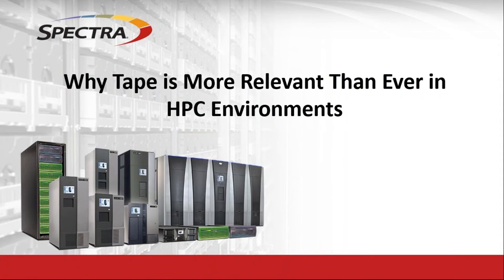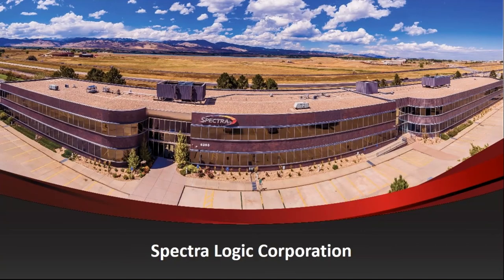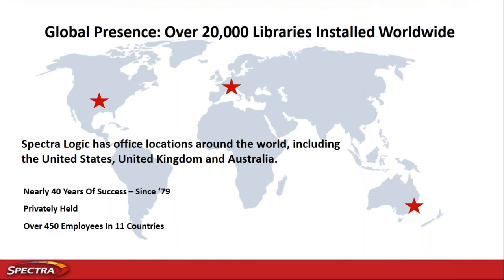For those of you who are not familiar with Spectrologic, we are headquartered out of Boulder, Colorado, known to many as the Silicon Valley of storage in the storage industry. We have offices spread across the world — EMEA out of our Bracknell office in the UK, and Asia-Pac located in Sydney, Australia. One of the things I really like to point out about Spectrologic is that we've been doing this for nearly 40 years, making us the longest standing manufacturer dedicated solely to secondary storage in the industry. We're a privately held organization, meaning our shareholders are really our customers, so you vote with your dollars, keeping us very close in touch with those we work with in developing solutions.